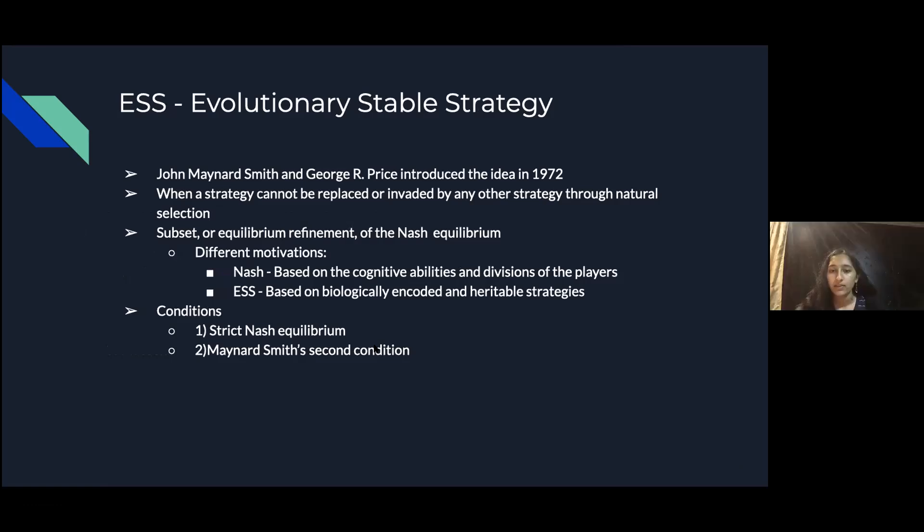Another important aspect of evolutionary game theory is ESS, which means evolutionary stable strategy. This concept was introduced in 1972 by John Maynard Smith and George R. Price, and this is when a strategy cannot be replaced or invaded by any other strategy through natural selection. ESS is a subset or an equilibrium refinement of the Nash equilibrium, and it differs based on motivation. The Nash equilibrium is based on the cognitive abilities and decisions of the players, and it is often thought that the players have a preconceived notion of how the game is going to work, compared to ESS, which is when they choose their strategy based on biologically encoded and inheritable information.